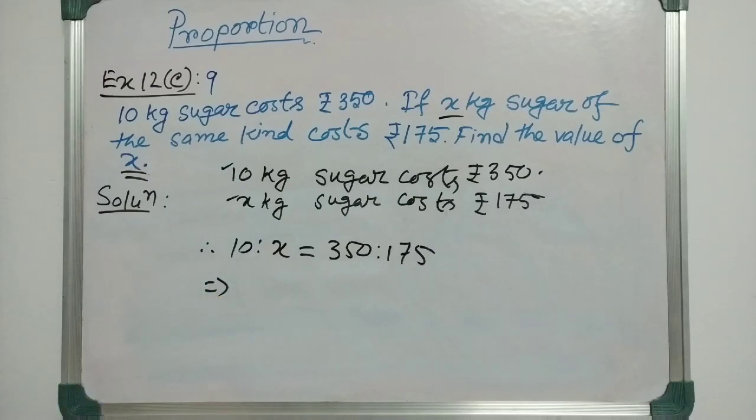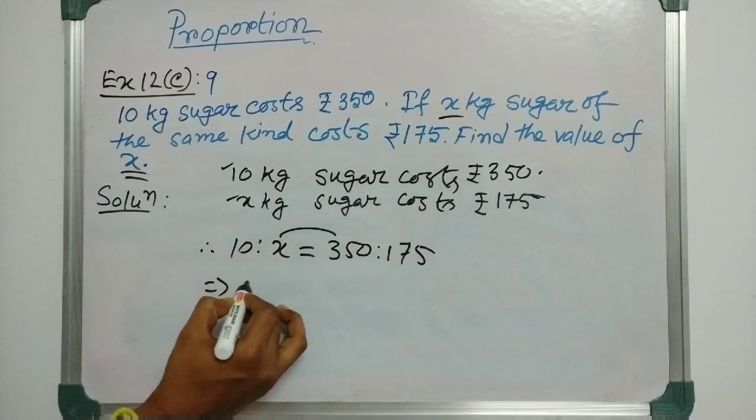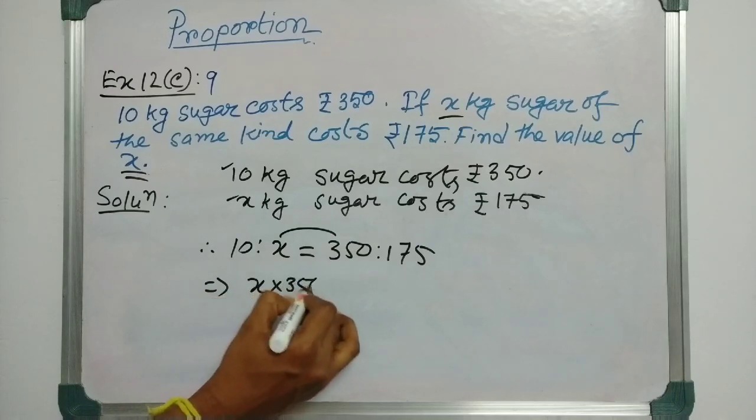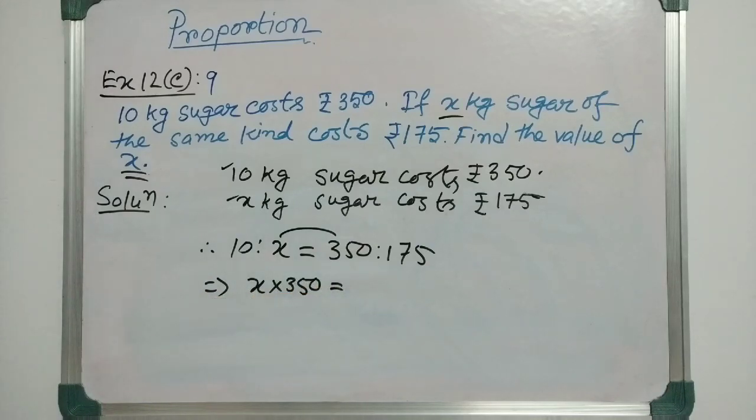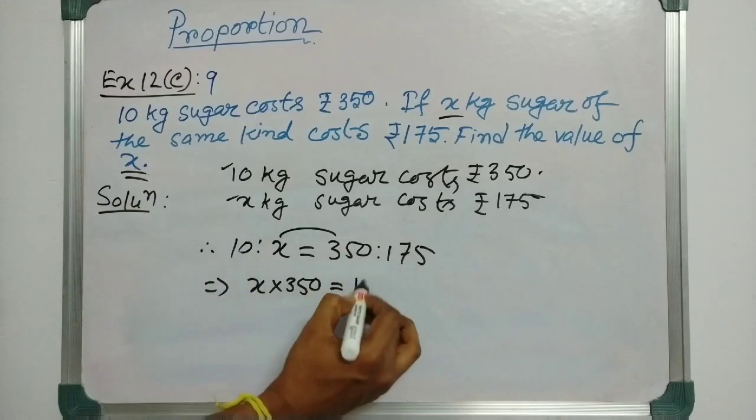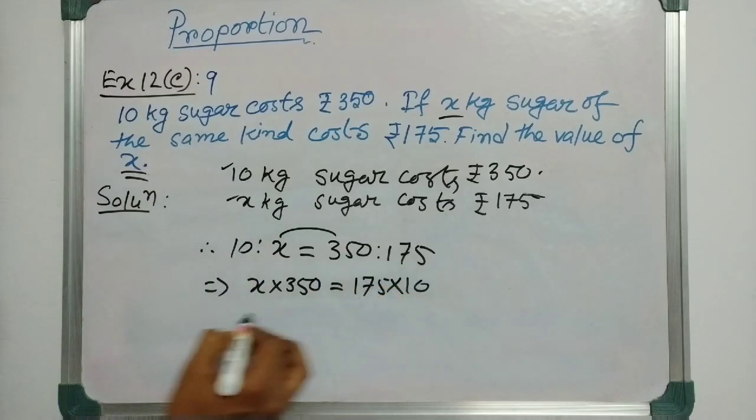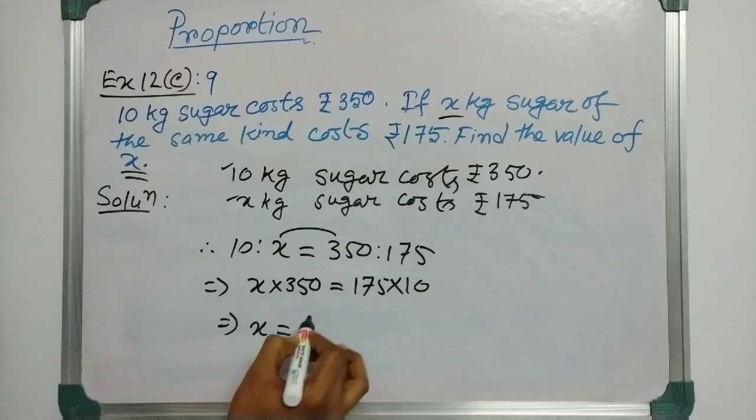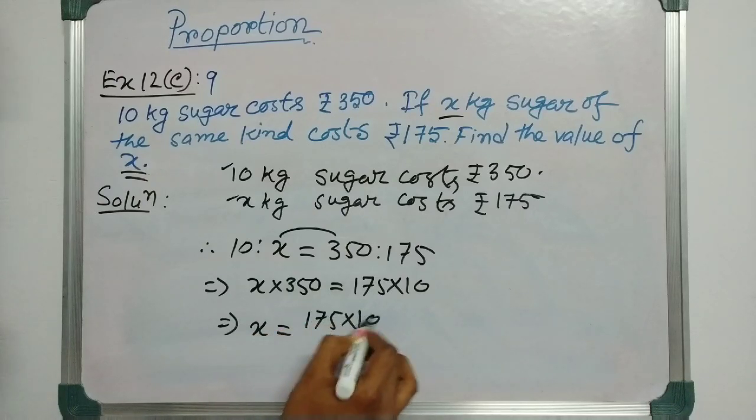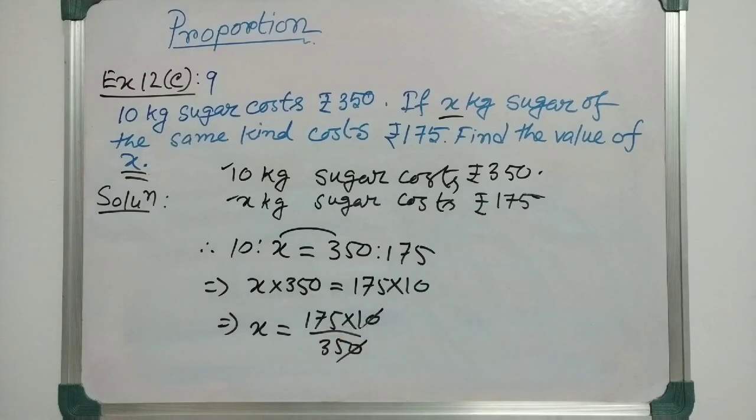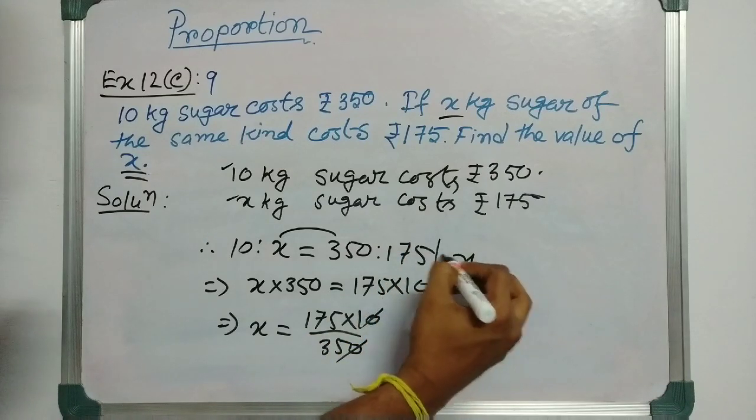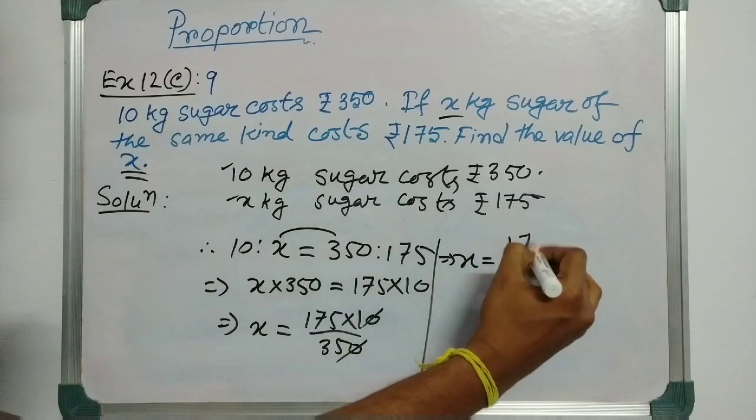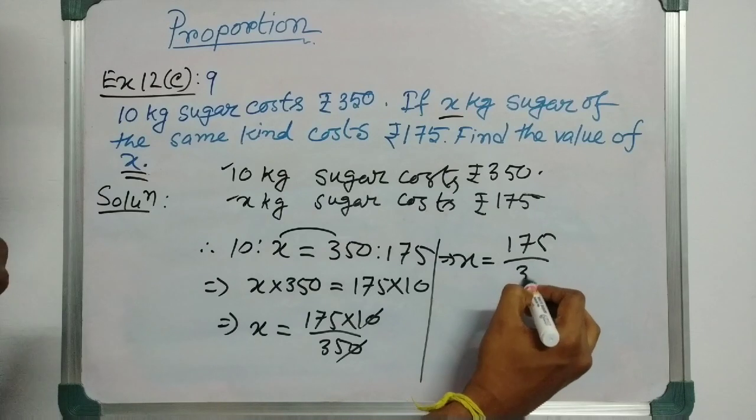Now, the product of the means, that means this one, x into 350, is obviously equal to the product of the extremes, that is 175 into 10. That means x equals 175 into 10 by 350. We can divide by 5.